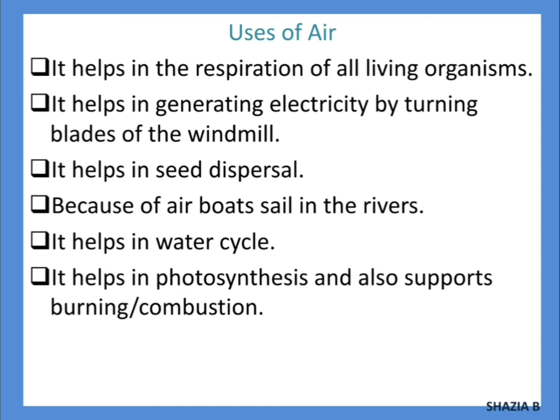Air also helps in the water cycle, which you have already learned. It also helps in photosynthesis and supports burning or combustion. Photosynthesis is the process of making food by plants. The plant's leaves make food, and for this photosynthesis purpose they actually need a certain gas — certain air is needed by the plants. Air also supports burning or combustion. In order to burn something, we actually need air, which we will discuss later.